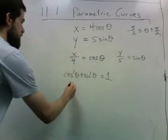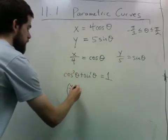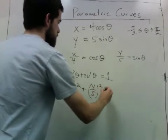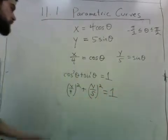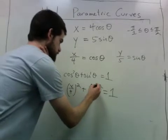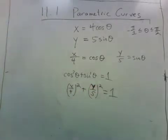So substituting here, I have x over 4 squared plus y over 5 squared equals 1. So x and y satisfy this equation. And if you remember your conic sections from whenever you learned of them, this is actually an ellipse.